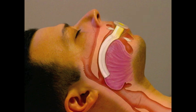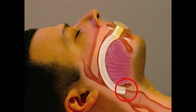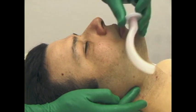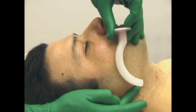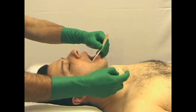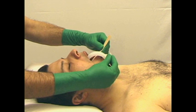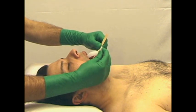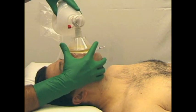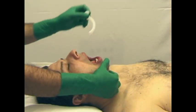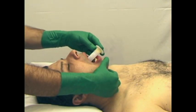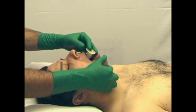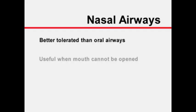Too small an oral airway may push the tongue against the oropharynx. Too large an oral airway may push against the epiglottis and trigger laryngospasm. The correct size of an oral airway may be estimated by holding the airway next to the patient's mouth; the tip should reach the angle of the mandible and no further. An oropharyngeal airway can be inserted by depressing the tongue with a tongue blade and advancing the airway towards the base of the tongue. Alternatively, the airway can be inserted upside down and then rotated 180 degrees as it is being advanced posteriorly.